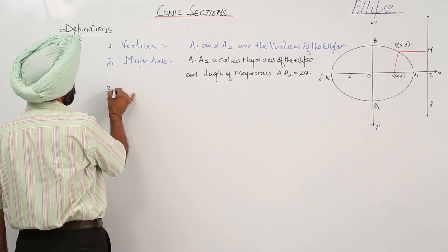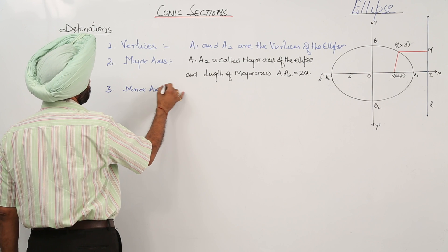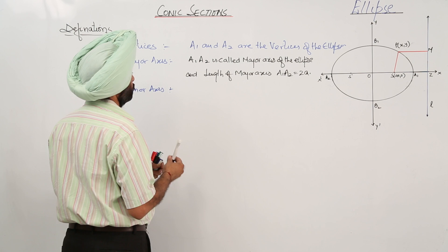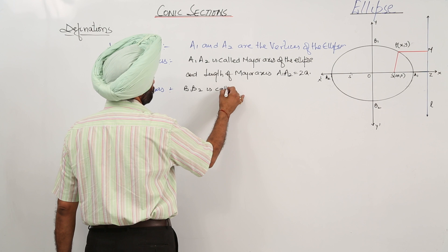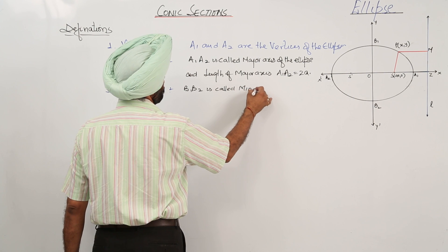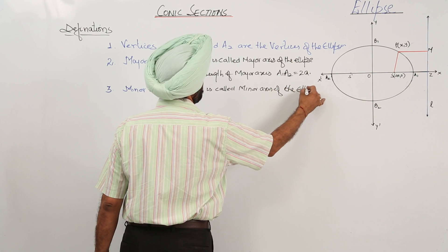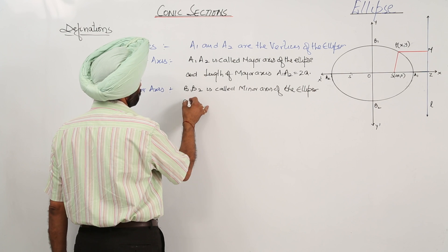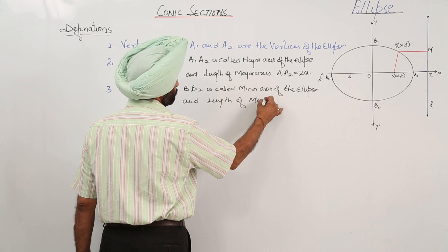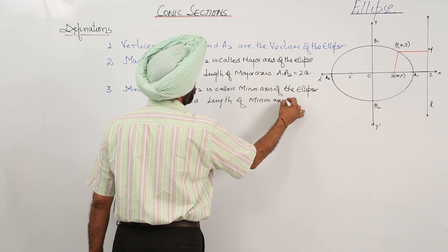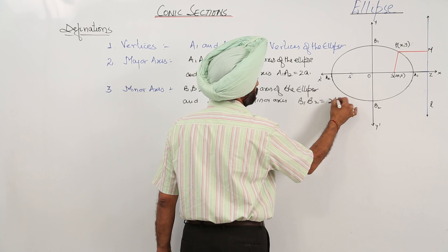We are having minor axis. B1, B2 is called minor axis of the ellipse. And length of minor axis B1, B2 is equal to twice of b.